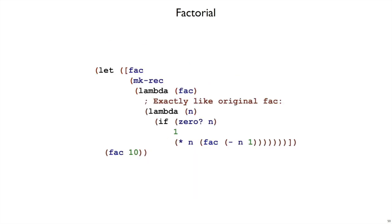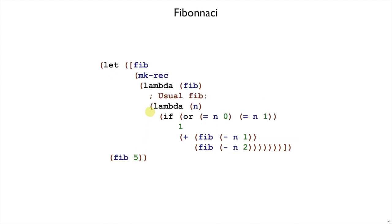And if we wanted to write the factorial function and we've got make-rec, we could just write it like this. And we could write other functions, like the Fibonacci function. The general pattern is you say let the function you want, then you have to say make-rec, then you have to say lambda, and you have to repeat the name that you want. But then you get to write the Fibonacci function as you usually would.